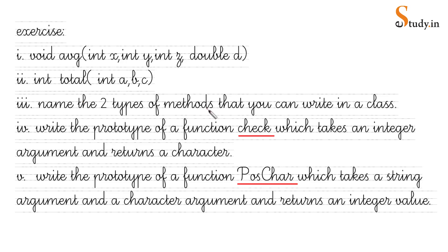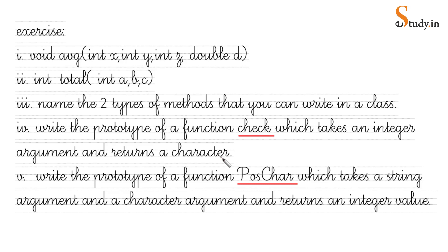Third question: name the two types of methods you can write in a class. The answer is static methods (also called class methods) and non-static methods (also called instance methods). Next: write the prototype of a function named 'check' which takes an integer argument and returns a character value — try this before we discuss the answer.